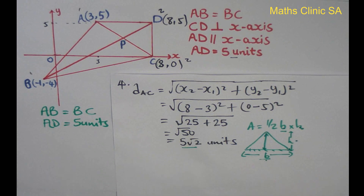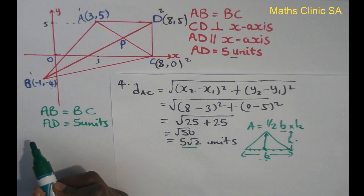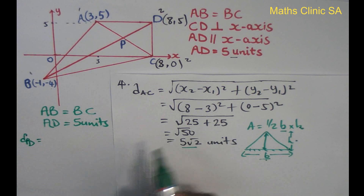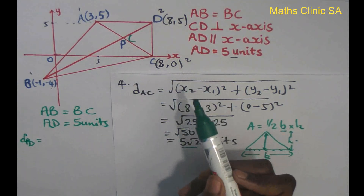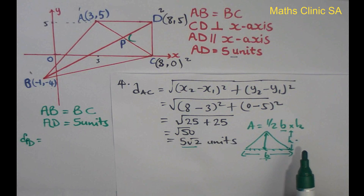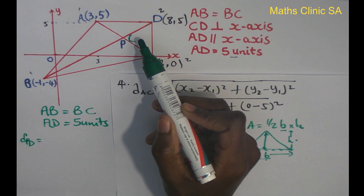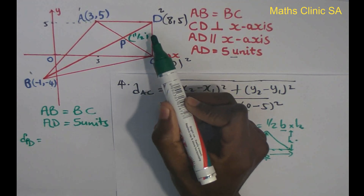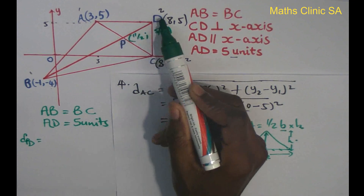I will say that the length is PD. The distance PD equals 11 over 2 in the x-direction and 5 over 2 in the y-direction. This is the final length PD.